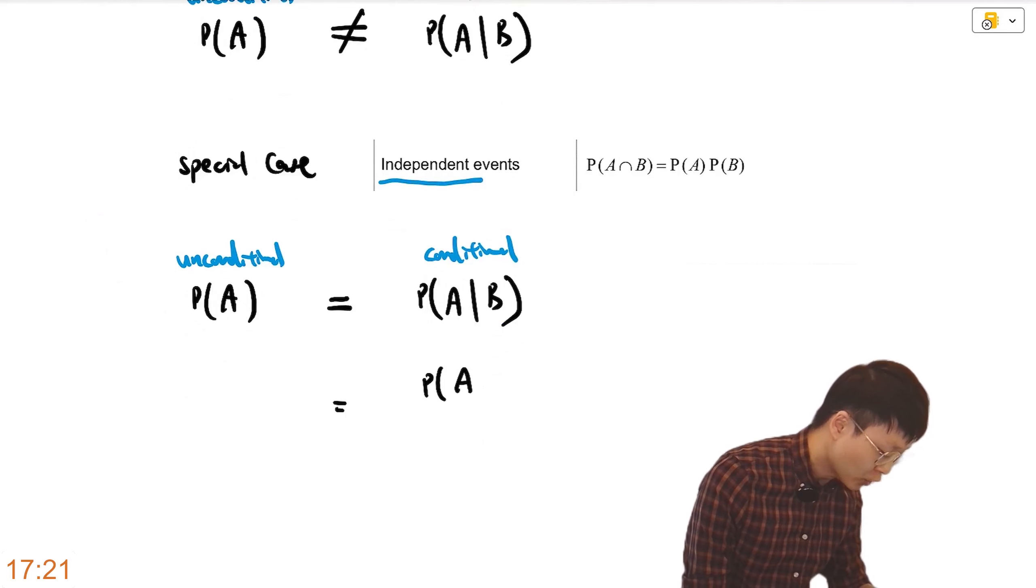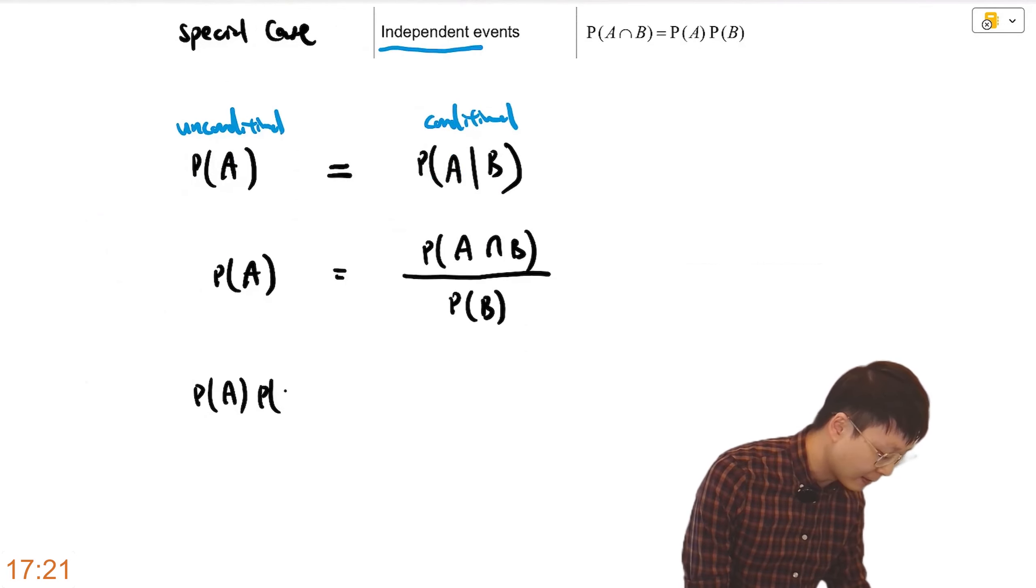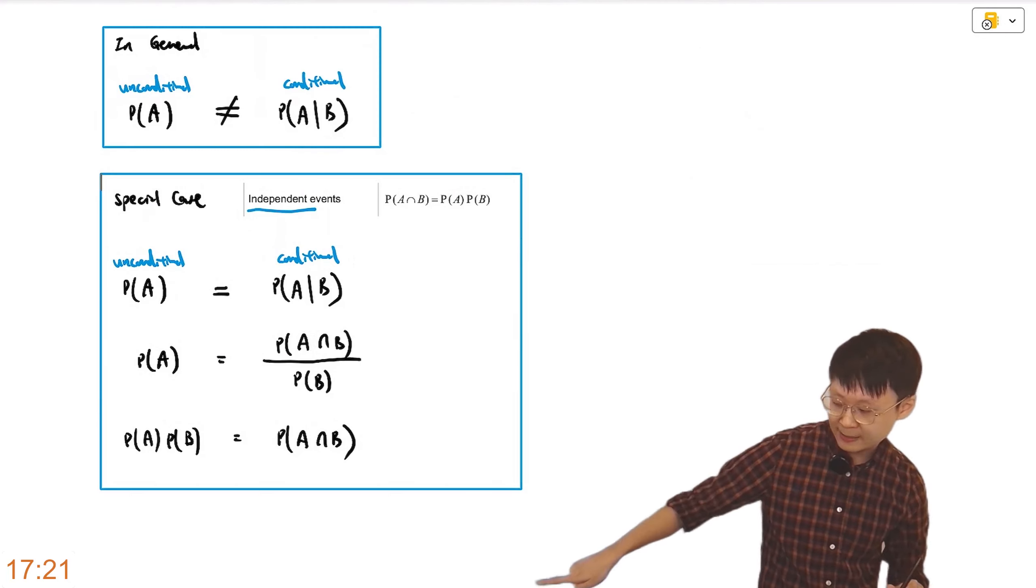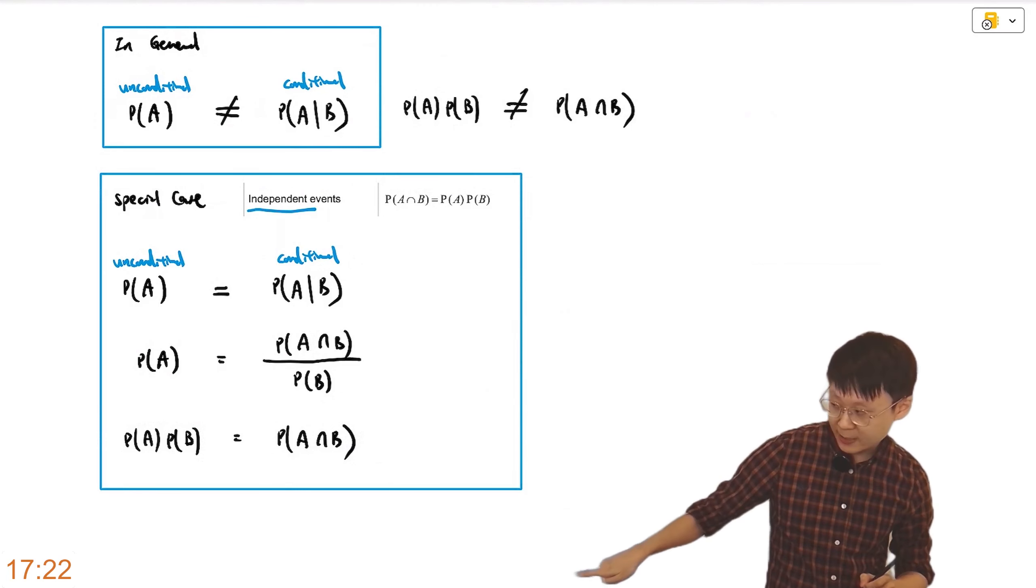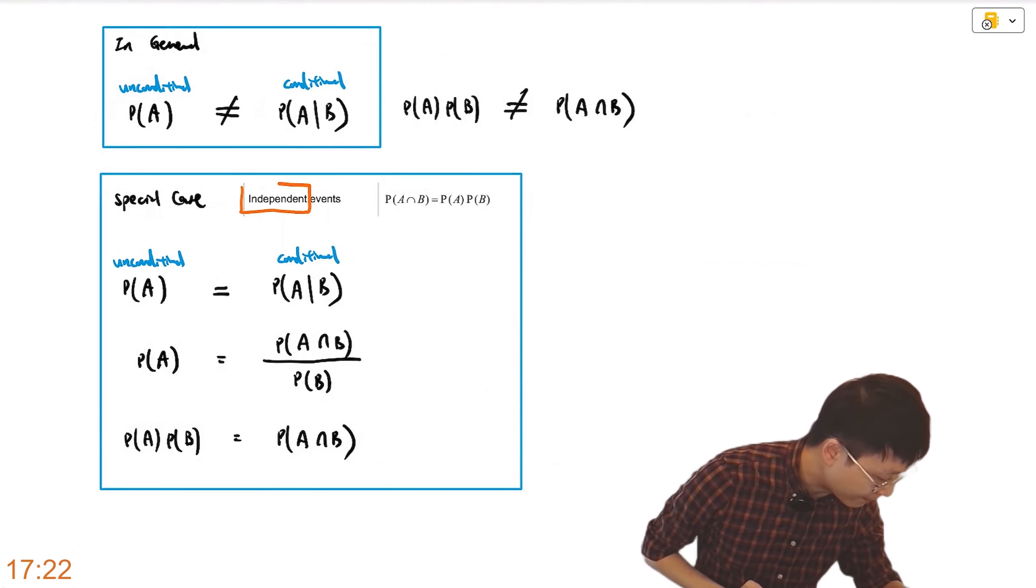And let's explore the algebra. Use the conditional probability, A intersection B, divide by P(B). P(A) times P(B) equal to A intersection B. The intersection equals to the product of the two probabilities. When they happen to be equal, the two events are known to be independent.